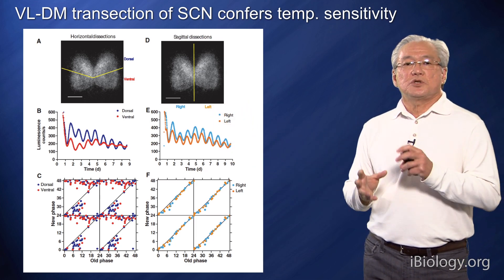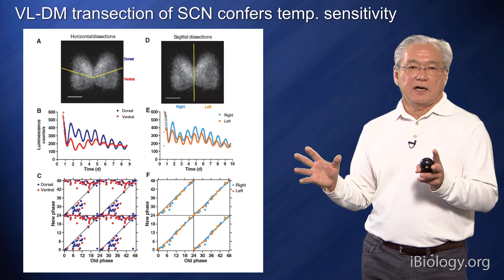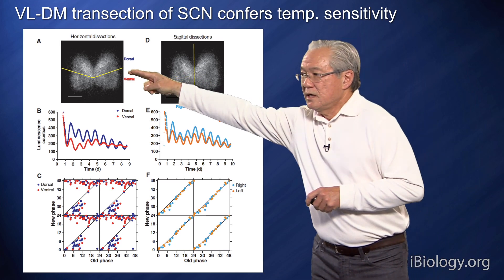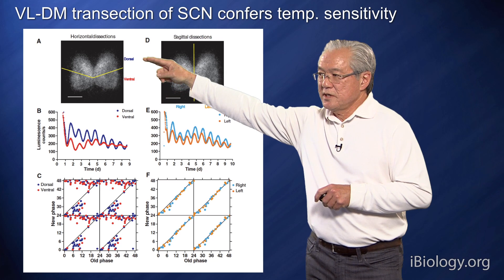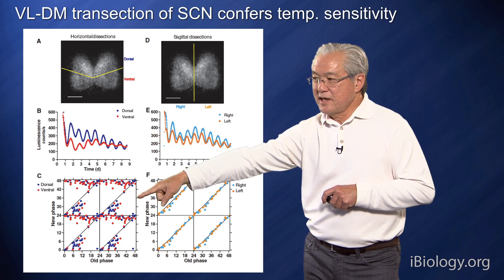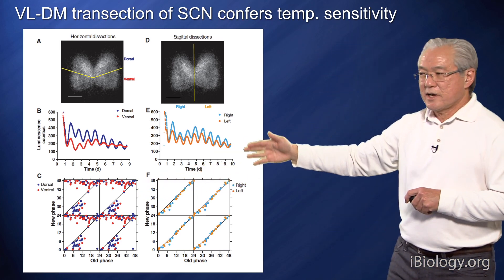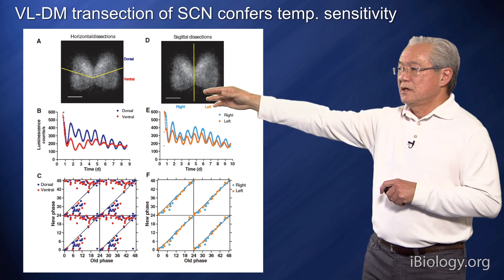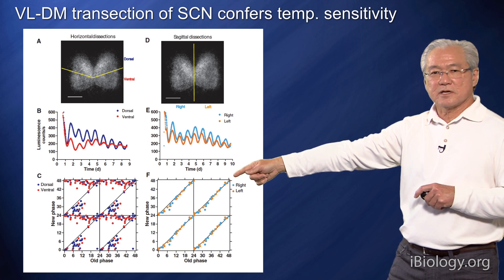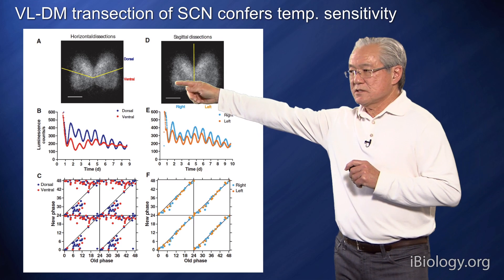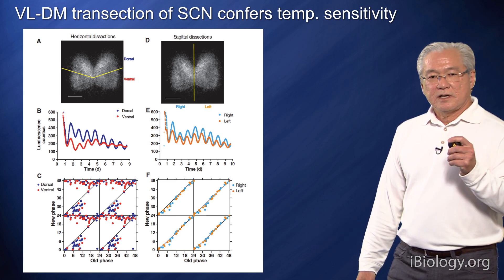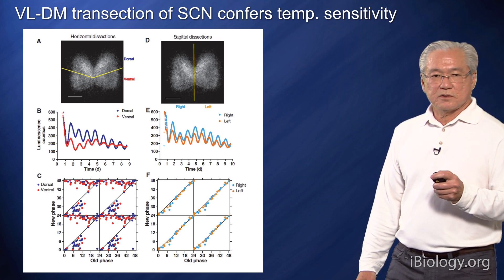This suggests that it is really the coupling within the SCN that makes it more robust and more resistant to temperature resetting, and also makes it different from a peripheral tissue. Interestingly, the SCN has two major subdivisions: the ventral lateral, or VL, and the dorsal medial. You can transect the SCN to separate the dorsal and ventral regions. When you culture those two halves of the SCN, they both have rhythms, but incredibly, they now have strong or type 0 resetting. In contrast, if we cut the SCN down the midline, both the right and left SCN still have rhythms, but in this case they remain robust or resistant to temperature. This very simple experiment suggests there's a pathway between the ventral lateral and dorsal medial SCN that confers temperature resistance, suggesting that coupling is important within the nucleus to make it robust.